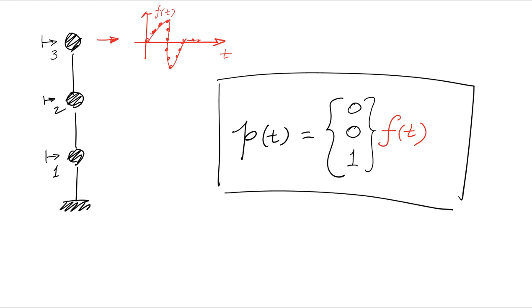So basically this vector right here gives you the spatial distribution of the load. This is a spatial distribution vector. It tells you where the load, the time history is applied.